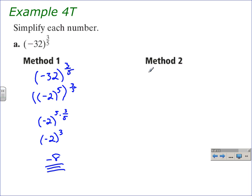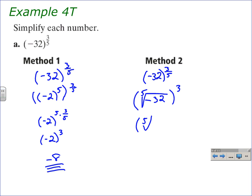The other method is to convert negative 32 to the three-fifths power into radical form and simplify that way. In radical form this is the fifth root of negative 32, raised to the third power. We write the radicand as a power of five: negative two to the fifth power. The fifth root of negative two to the fifth leaves us negative two — the same place we were in method one — and negative two to the third power is negative eight. So you can see the two methods: using properties of exponents or using radical form.